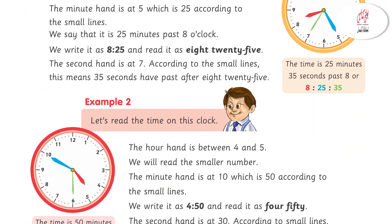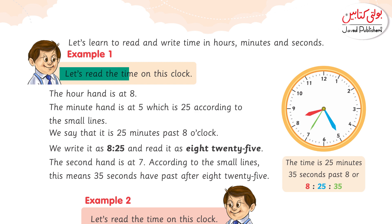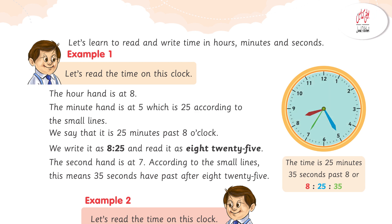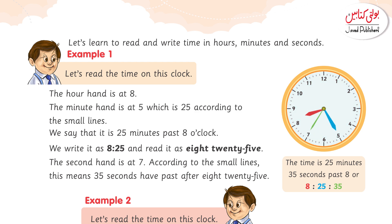On page number 101, Example 1: Let's read the time on this clock. You will notice that the hour needle points to 8, the minute needle points to 5, and the second needle points to 7. We write the hour first, which is 8. Then we write the minute — you have taught students that you multiply the needle's number by 5. The minute needle is at 5, so we multiply 5 by 5, giving 25.